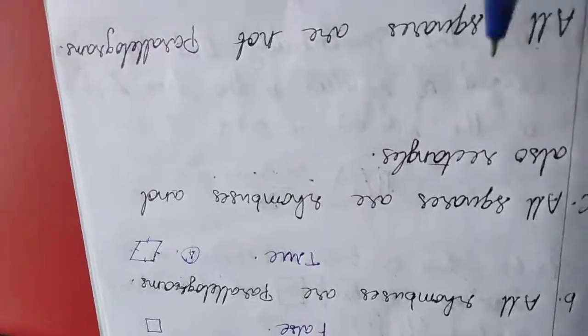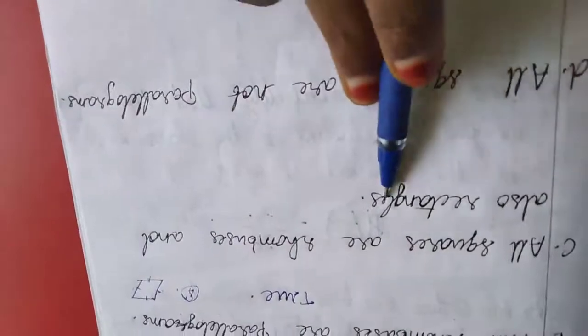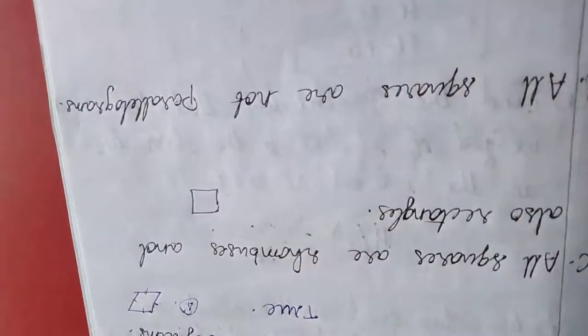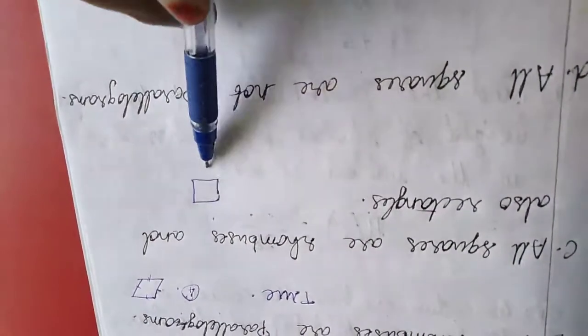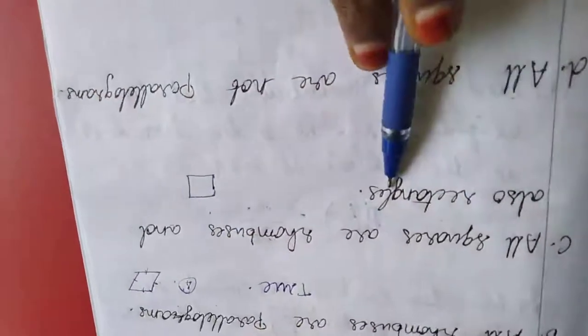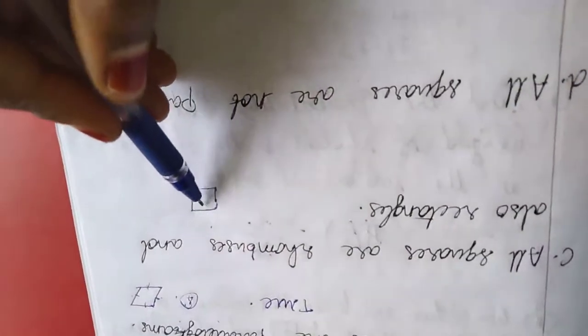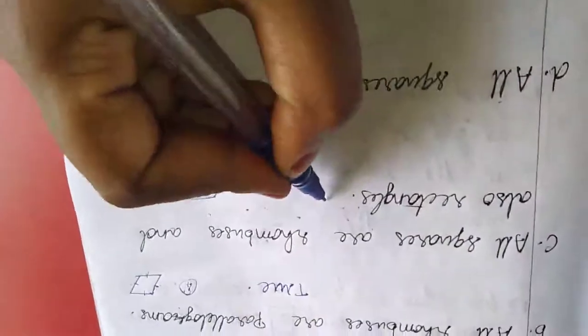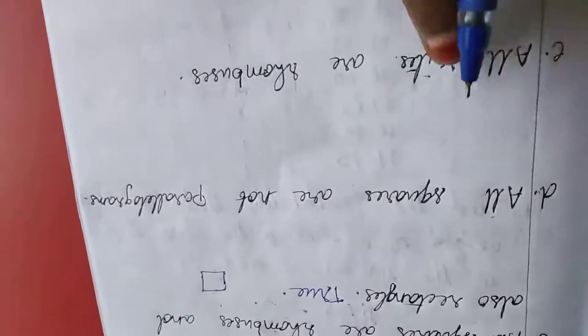All squares are rhombuses and also rectangles. Squares have all sides equal like rhombuses, so it is true. And also rectangles, rectangles have opposite sides equal, squares have opposite sides equal with four sides equal, so it is true.